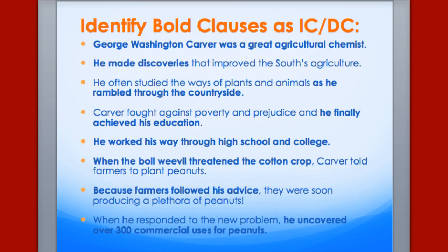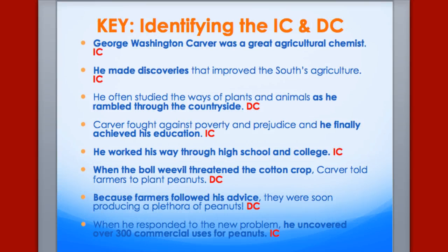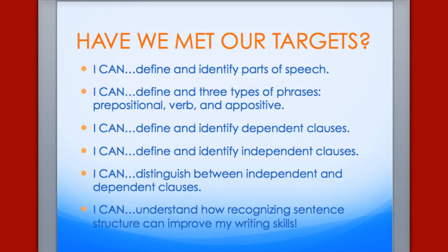Identify the bold clauses as ICs or DCs. Hit the pause button, work your way through the note sheet, and then check your answers. See if you had the correct answers — if not, make a few notes and ask some questions in class. And finally, have we met our targets? These are the targets of our unit, and as you can see, these are really important aspects so that we can improve our writing.